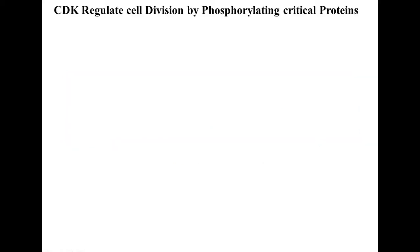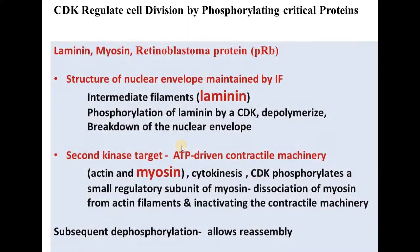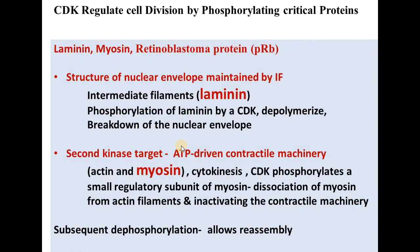CDK regulates cell division by phosphorylating some critical proteins. There are three critical proteins: the first one is lamin, the second is myosin, and the third one is the retinoblastoma protein.